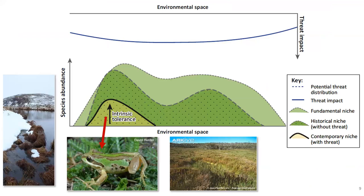Another mechanism is where threat impact is relatively consistent across environmental space, but something about certain environmental conditions means the population is able to withstand it. The alpine tree frog was largely extirpated from ephemeral pond habitats but persists in perennial pond habitats. The main threat, chytrid fungus, is basically uniform throughout the high country. But during drought, there's almost complete recruitment failure in ephemeral systems, whereas perennial water bodies maintain consistent recruitment—so more assured recruitment allows the species to persist despite the threat.